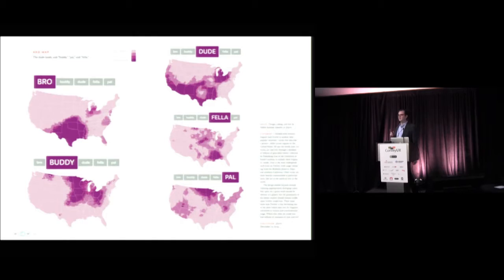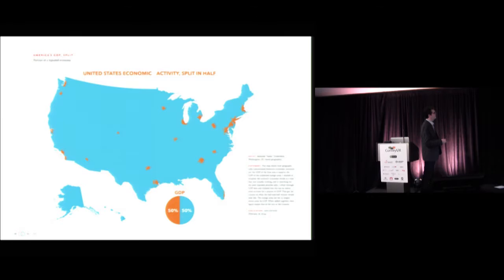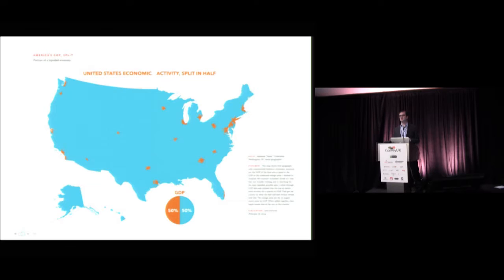Number two: this shows all the economic activity of the United States, sliced in two — blue and orange. If you take all these little orange spots, the economic activity in those areas equals everything else. What I like is the simplicity: it boils down this basic fact into one image — there are areas of incredible economic concentration in our country and then other areas where there's not much happening. This is one of the central goals of good infographic work: make it simple, get it to the core.